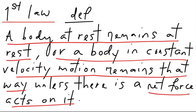Once a body has been set in motion, no net force is needed to keep it moving. A body acted on by no net force moves with constant velocity, which may be zero, and therefore zero acceleration, because constant velocity means zero acceleration.